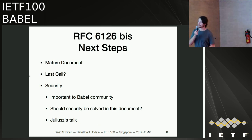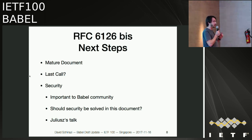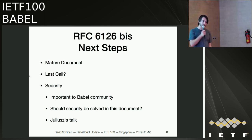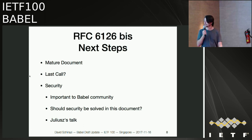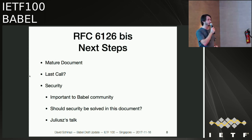In terms of next steps for this document, it's in pretty good shape — the changes coming lately are pretty minor. As Donald said, we went through last call, which ends tomorrow, and we had pretty good support. The one item that needs to be cleared up is security, and I'll let Julius talk more about that. We all agree that security is really important; we've put work into Babel to make it easier, such as unicast hellos. The remaining question is how we specifically solve this and in what document. Any questions on 6126bis before I go to source-specific routing?